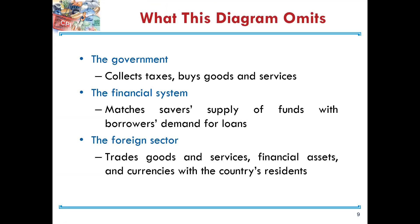What does this diagram omit? There are three important things. First, it omits the role of governments — the fact that governments collect taxes and buy goods and services. It also omits the role of the financial system, which is responsible for matching savers' supply of funds with borrowers' demand for loans. And it also omits the foreign sector, where there is trading of goods and services, financial assets, and currencies with the country's residents.